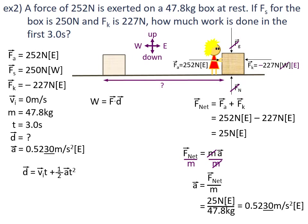Since the initial velocity is equal to zero, zero multiplied by time equals zero. So our formula has been simplified to displacement equals ½a·t².